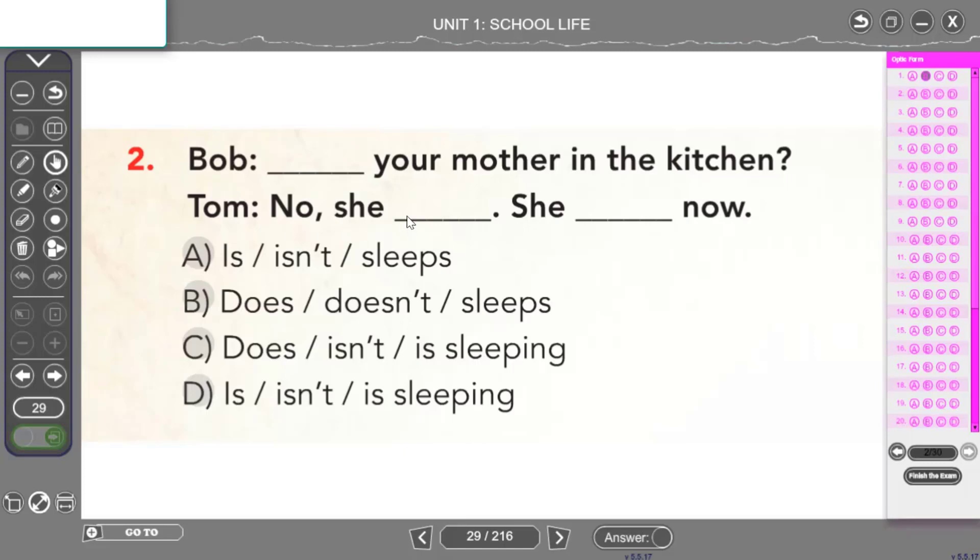Tom'un cümlesine bakmam lazım şimdi. No, she, hayır, değil demek için nasıl bir yapı kullanıyordum? No, she isn't demem gerekiyor. She is sleeping now. O şu anda uyuyor demem gerekiyor. Hangi şıkta var bu cevabımız? Is your mother in the kitchen? No, she isn't. She is sleeping. D şıkkında doğru cevabı görüyoruz.